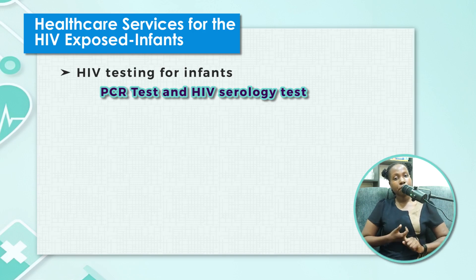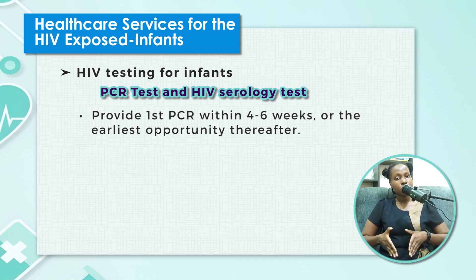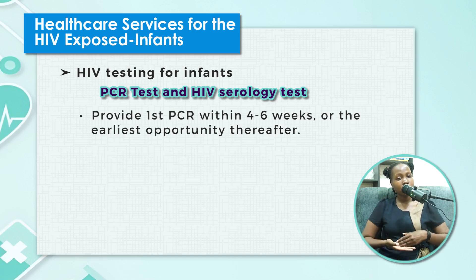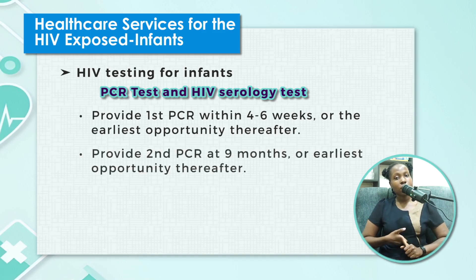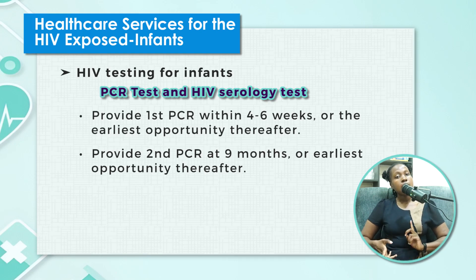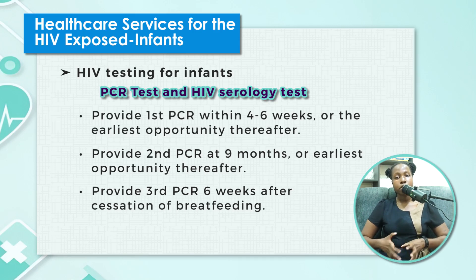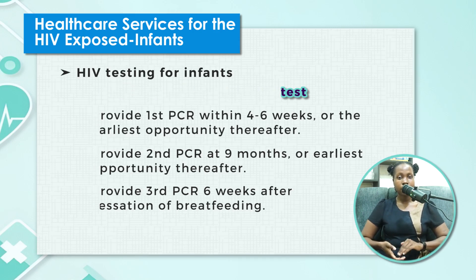We're going to do three DNA-PCR tests. The first is between four to six weeks after birth — for a low-risk infant who has been taking nevirapine for those six weeks. We do DNA-PCR because this child who has been breastfeeding is receiving passive immunity from the mother. The second PCR is done at nine months, whether the child is breastfeeding or not. The last DNA-PCR is done six weeks after cessation of breastfeeding, since the child may be receiving passive immunity via breast milk.